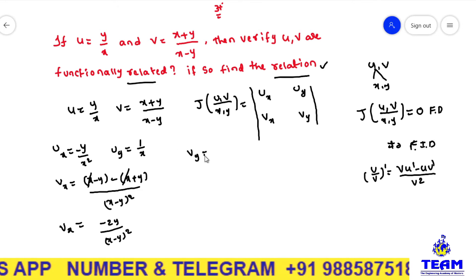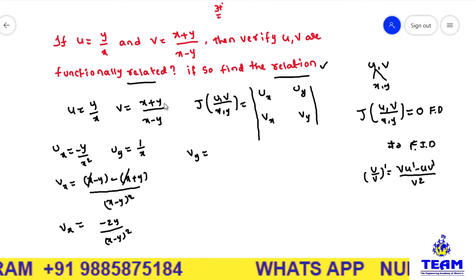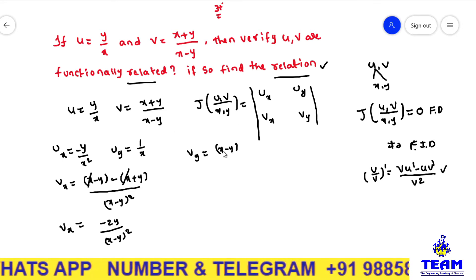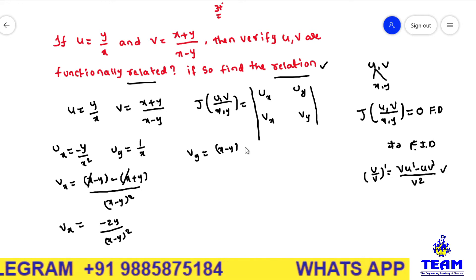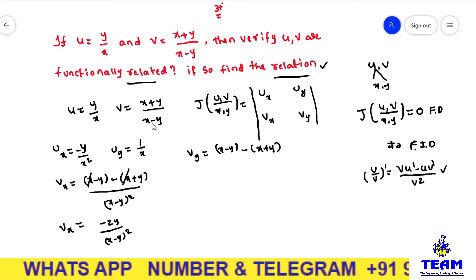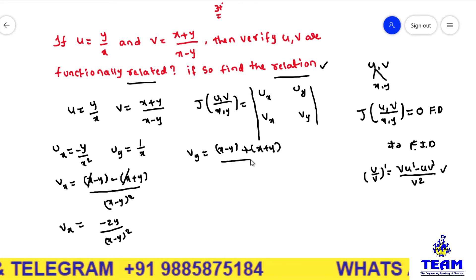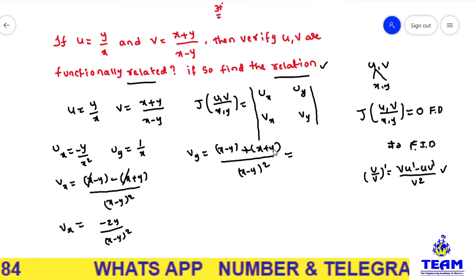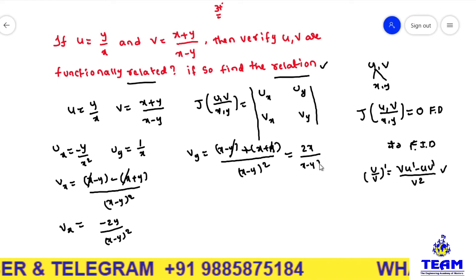Now I need to find dou v by dou y, differentiating v partially with respect to y. Both numerator and denominator contain y terms, so we apply the u by v rule again. Denominator (x minus y) into numerator derivative with respect to y is 1, minus numerator (x plus y) into denominator derivative with respect to y, which gives 0 minus 1 equals minus 1, making it positive. Divided by denominator squared x minus y whole squared. Simplifying, the y terms cancel, giving dou v by dou y equals 2x by x minus y whole squared.